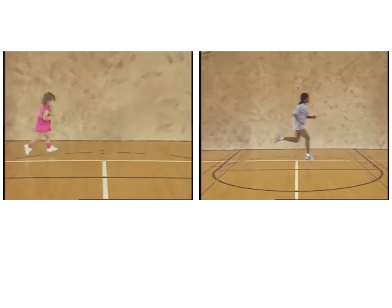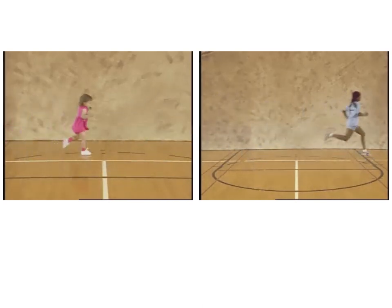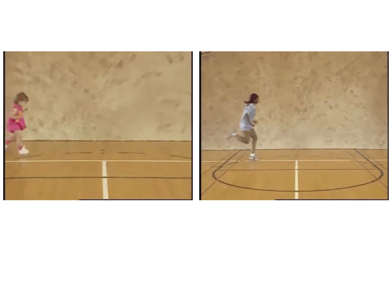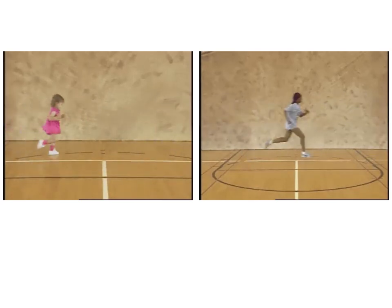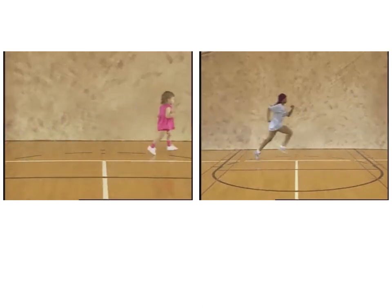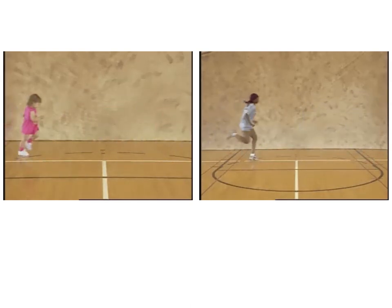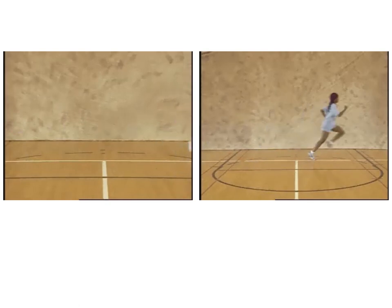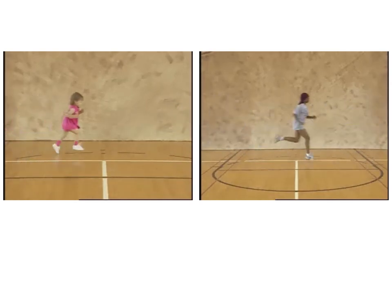The first obvious thing we can see is that the adult is running faster. We're not going to say the child is running one and a half meters per second and the adult three — we simply say they're quicker. We can be a bit more vague and say the adult is running more efficiently, is more agile, and their movements are much smoother. But if we want to get into specifics, this is where we start looking at the joint mechanics for each person.